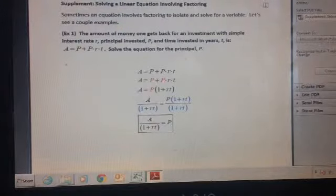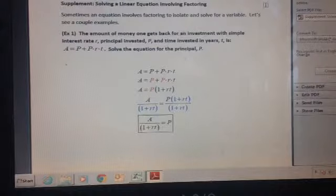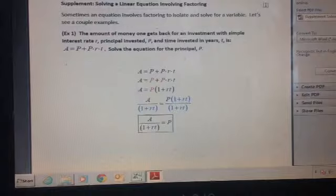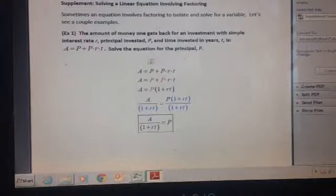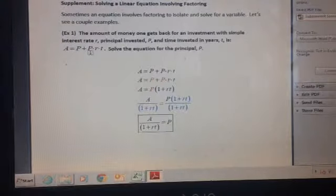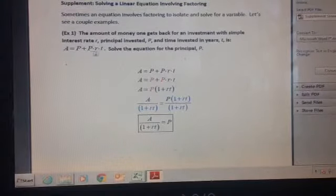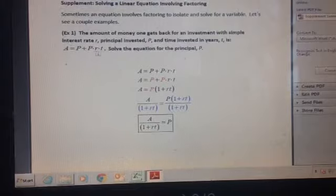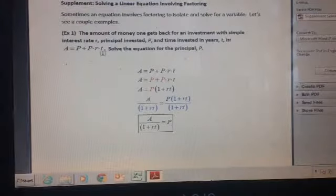The first example is in the money world. When you have an investment with simple interest, the amount you get back is based on three things: the principal you invest plus the interest. The interest is given by the principal times the rate as a decimal times the time in years that you have it in.